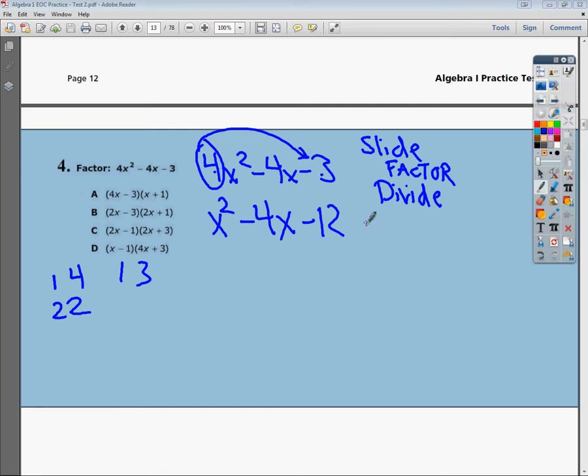Then I'm going to do a factor list for 12. And I'm going to look to see which one gives me negative 4. The way that I'm going to set them up, this sign being negative means that my signs in my answer are going to be different.